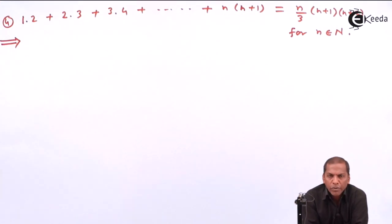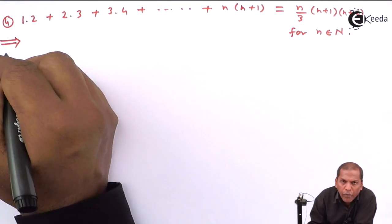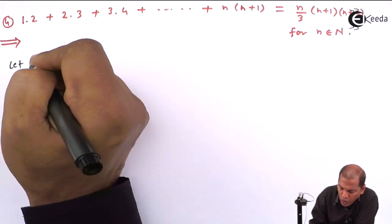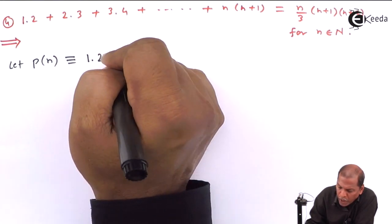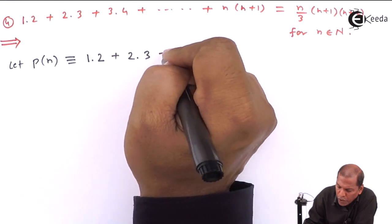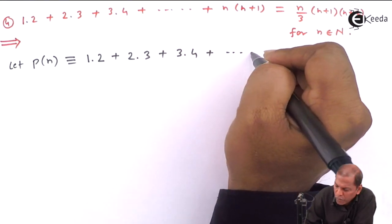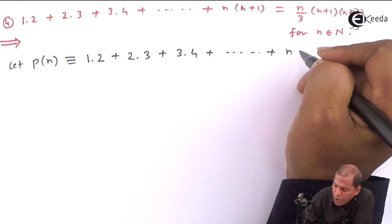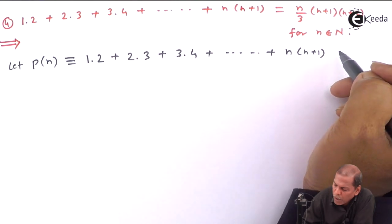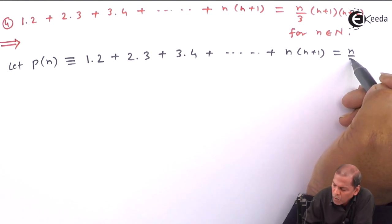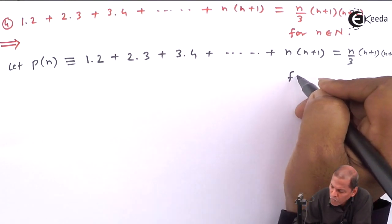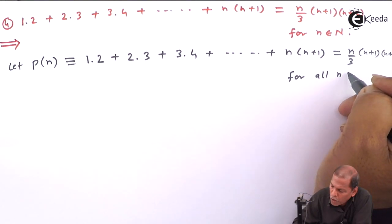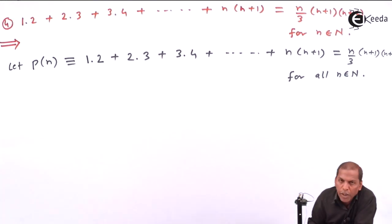Now let's see the solution. First of all, we denote the given problem as P(n). So let P(n) be: 1·2 + 2·3 + 3·4 + ... + n(n+1) = n/3 · (n+1) · (n+2), for all n belonging to the set of natural numbers.